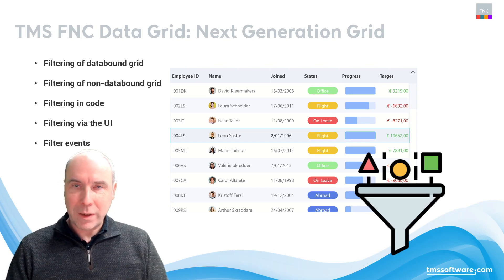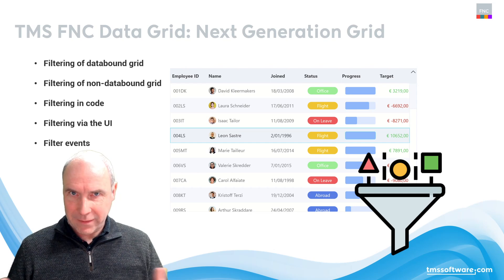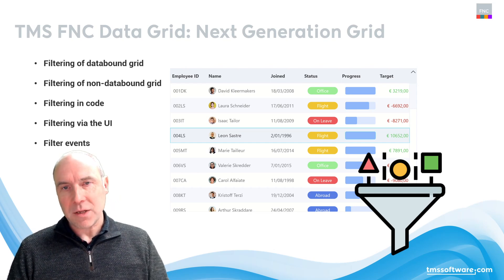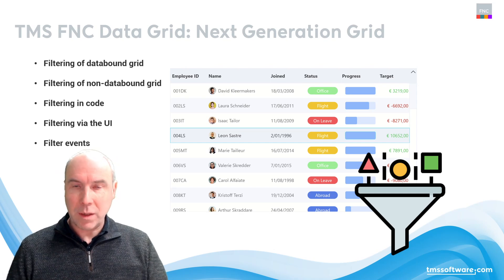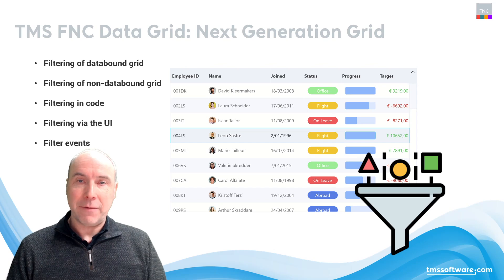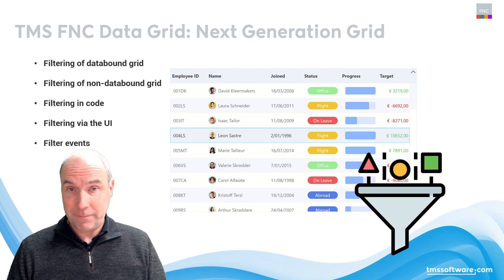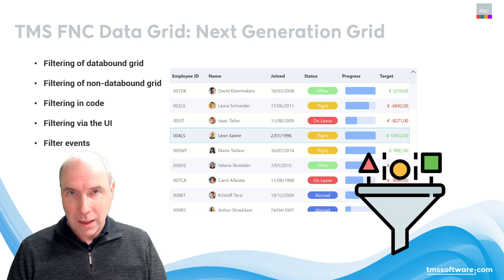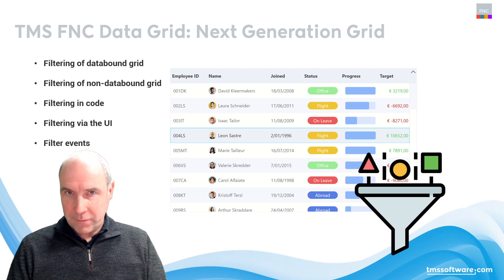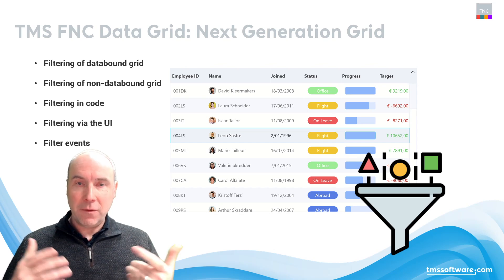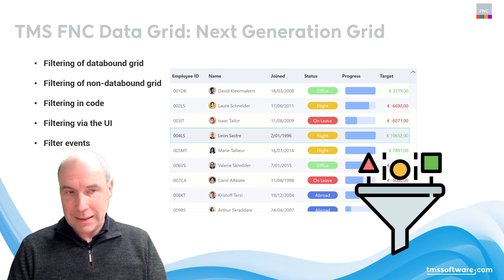In the first scenario, when the grid is bound to a data set, when you perform filtering from the grid, the grid will actually pass on the filtering to the data set. So the data set will be filtered and the grid will visualize the data from the filtered data set. In the scenario where you have the data loaded into the grid, it is the grid that will perform the filtering operation itself on the data in the grid.